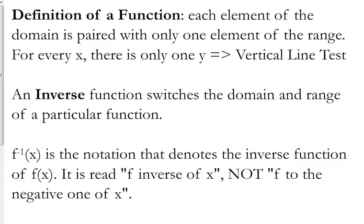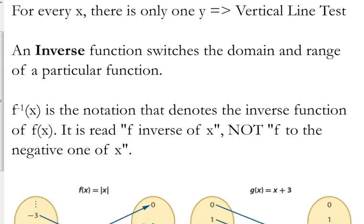What an inverse function does is it switches the domain and range of a particular function. So it switches your x's with your y's. Here's our notation. It looks like an exponent of negative one, but it is not. That's the inverse notation. You read that f inverse of x, and it's not f to the negative one of x. We can't use exponent rules to get rid of the negative exponent. It's f inverse of x.